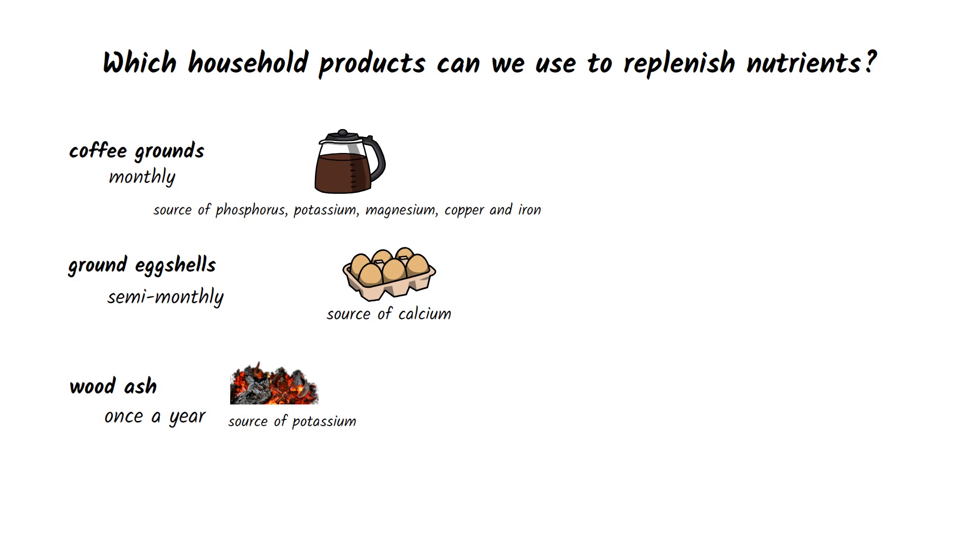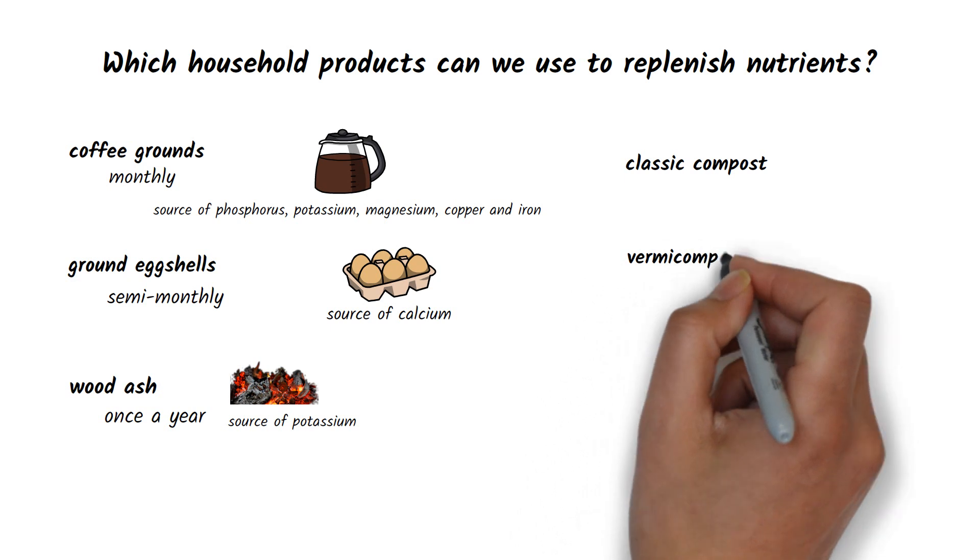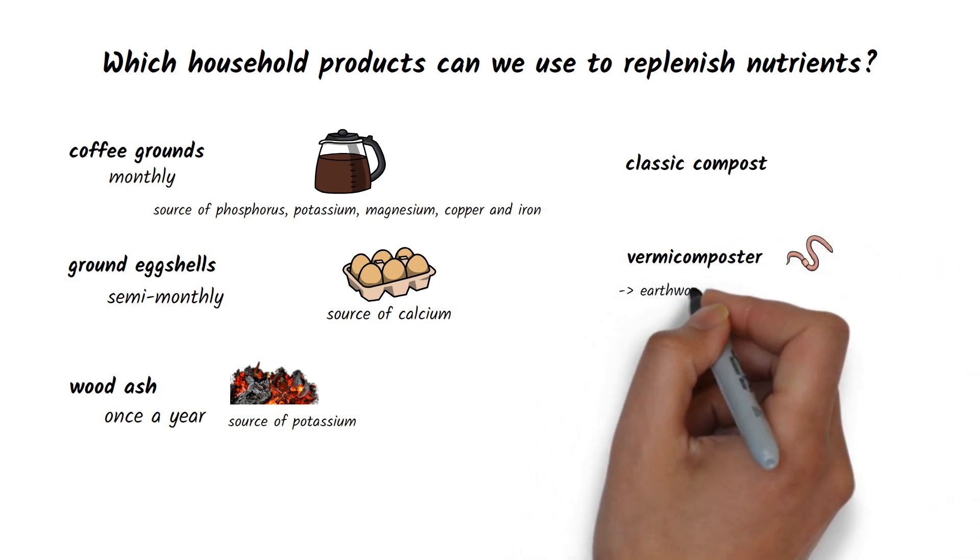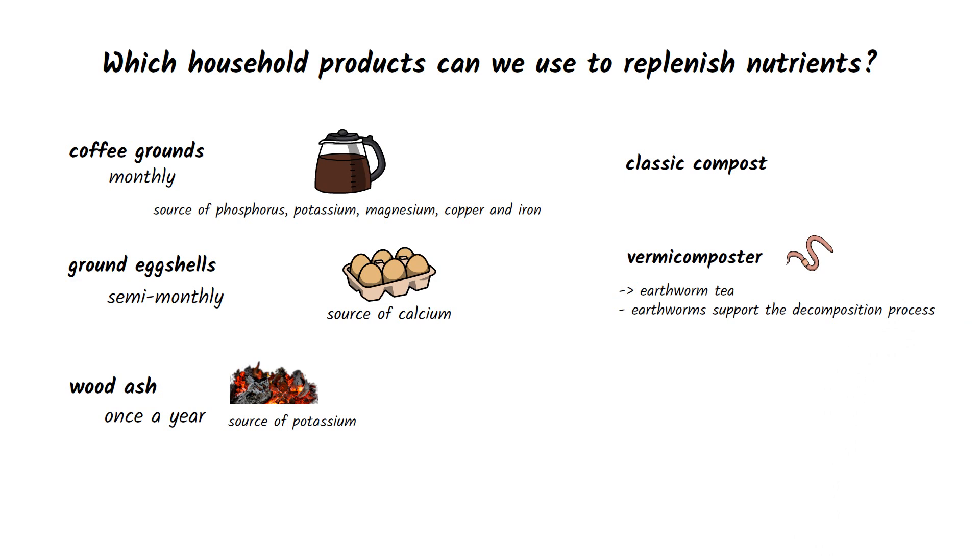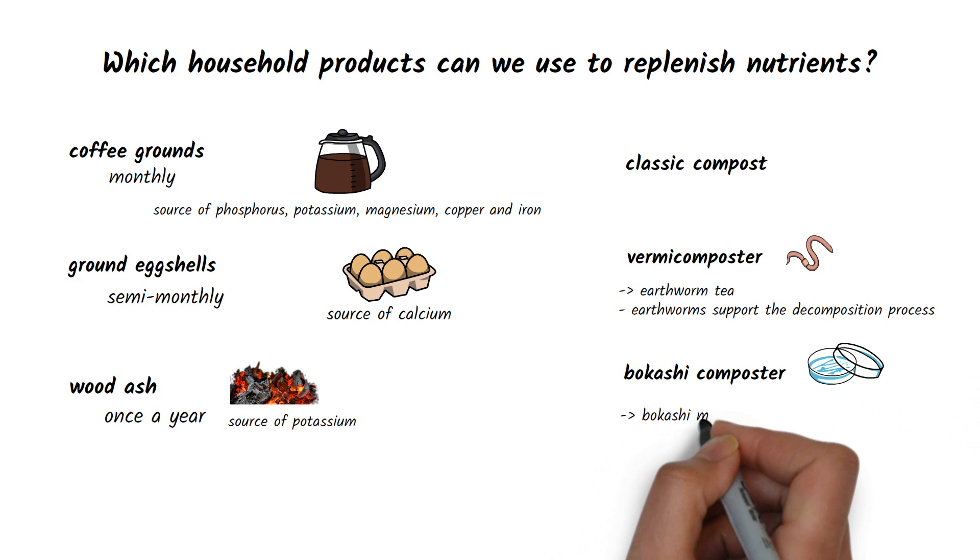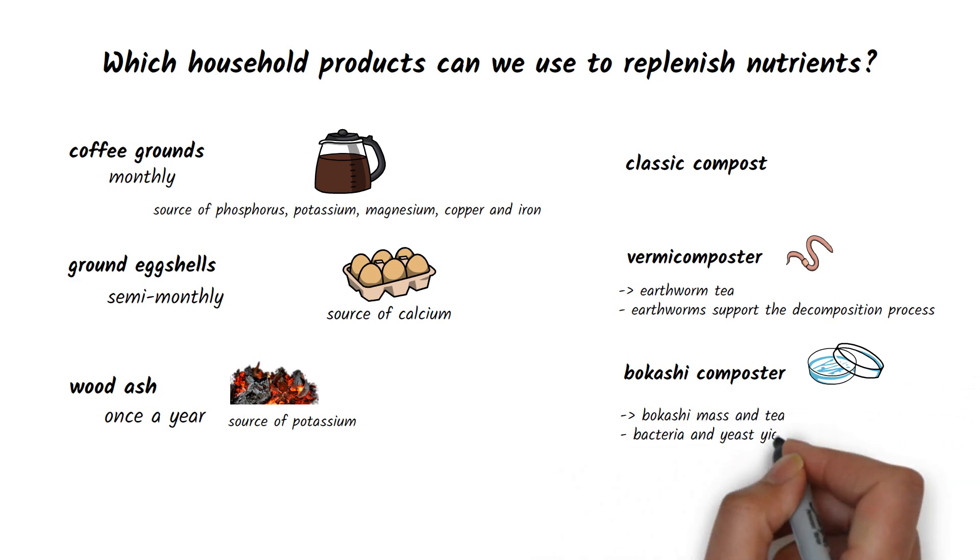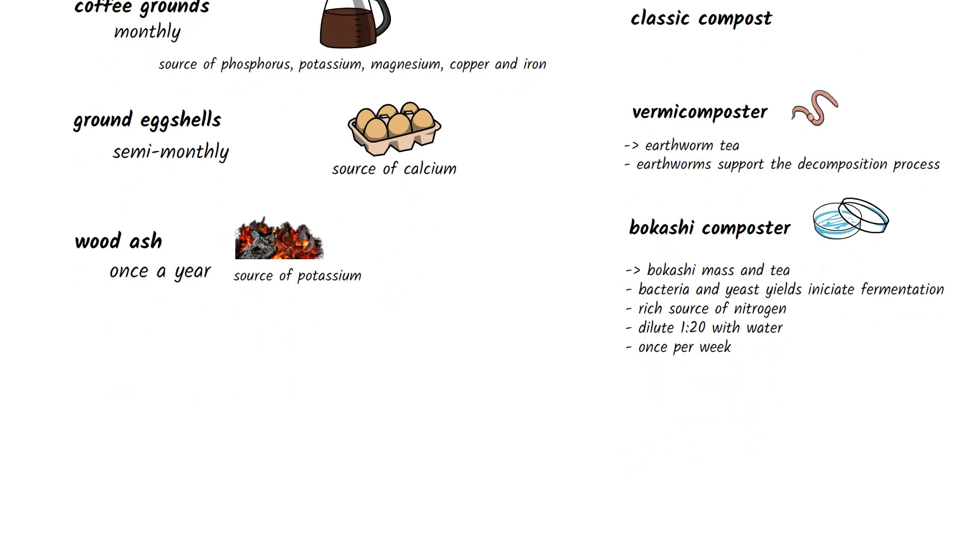At home, we can also produce our own complex source of nutrients for our plants. Classic composting, vermicomposting, from which we obtain the so-called worm tea by decomposing earthworms, or bokashi composting, from which, thanks to a mixture of bacteria and yeast yields through fermentation, a nitrogen-rich bokashi mass and tea is obtained. It should be diluted with water in a ratio of 1 to 20 and added to the plants once a week.